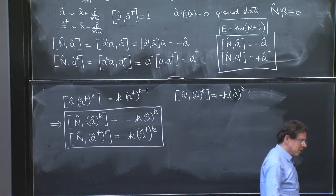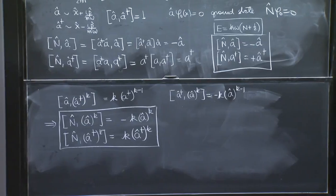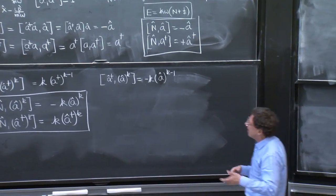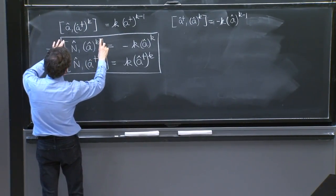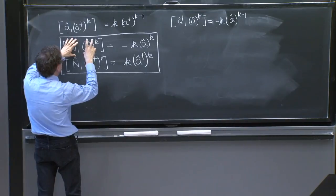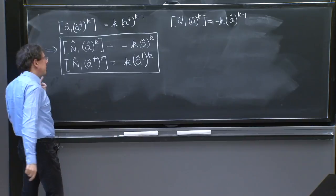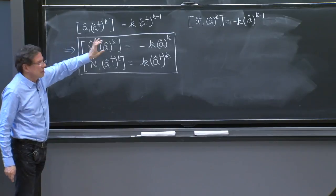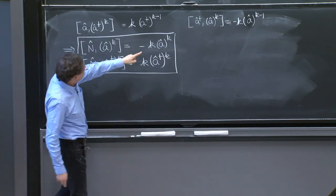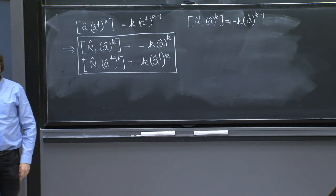And the number happens to be the number of a's or the number of a daggers. So that's the reason it's called the number operator, because the eigenvalues are the number of creation operators or the number of destruction operators. I was a little glib by calling it the eigenvalue, but it almost looks like an eigenvalue equation, which have an operator, another operator, and a number times the second operator. It's not exactly an eigenvalue equation, though, because eigenvalues you would just have this acting on the second one. But the fact that these k's appear here are the reason these are called number operators.